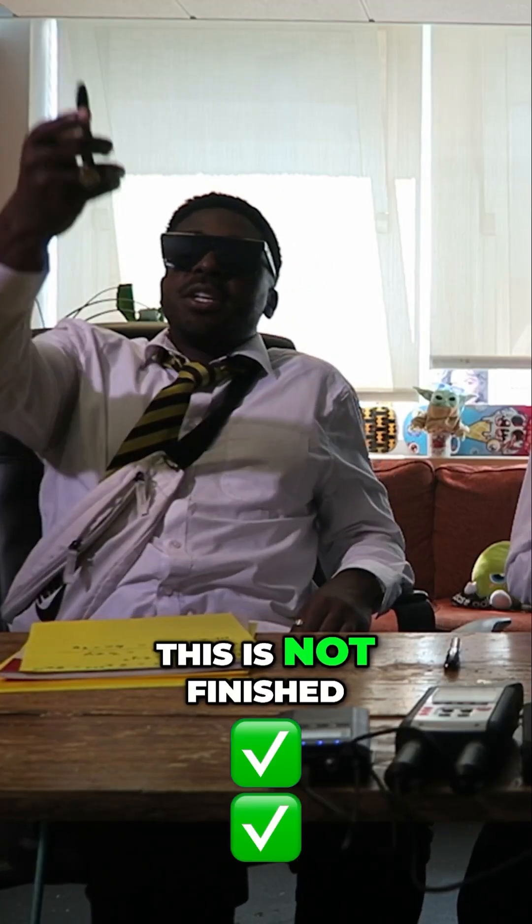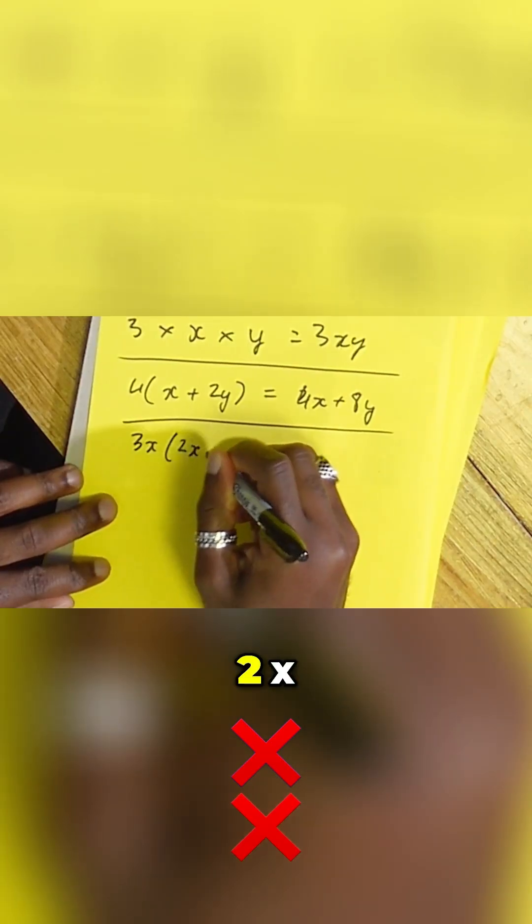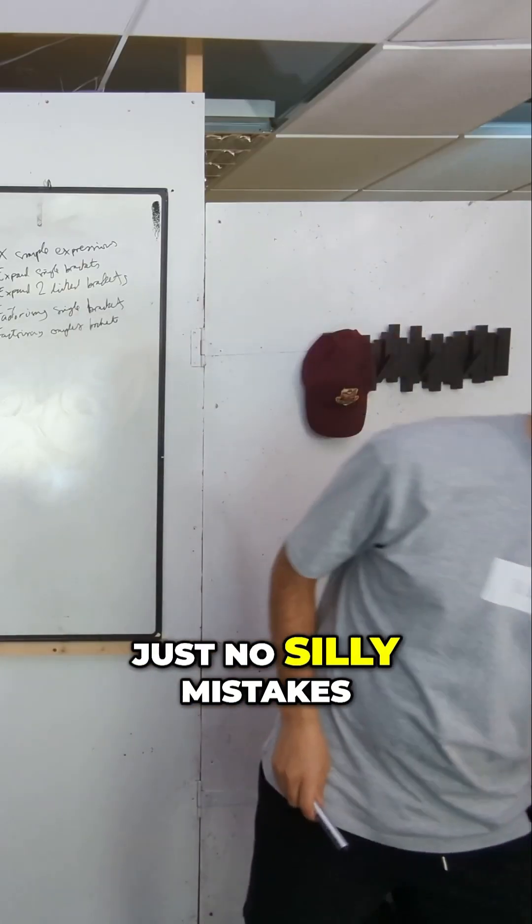Okay, if you want to copy these down. It's not finished. Tell him, tell him. 3x, 2x, minus 3y. Just no silly mistakes.